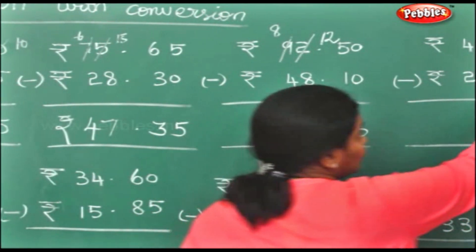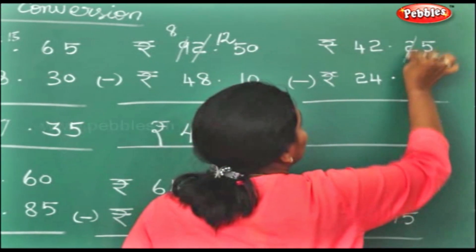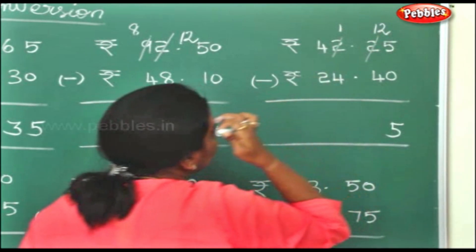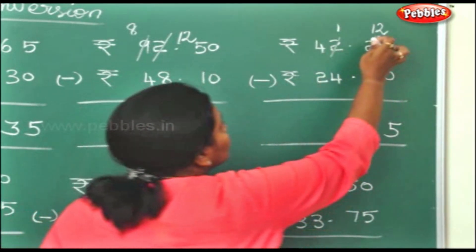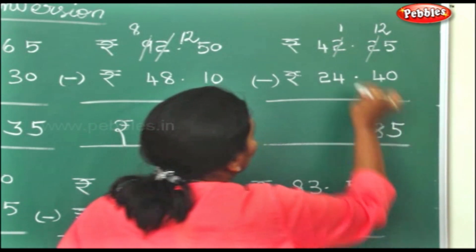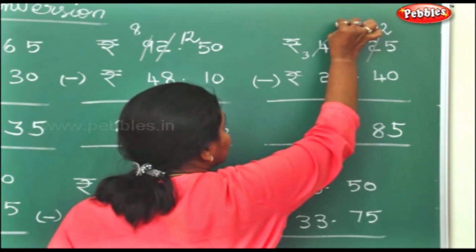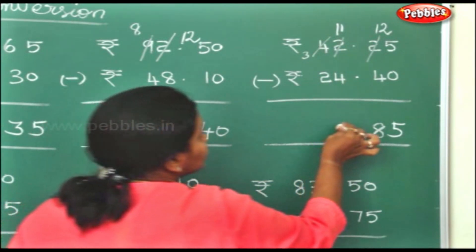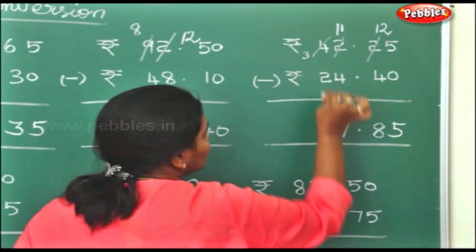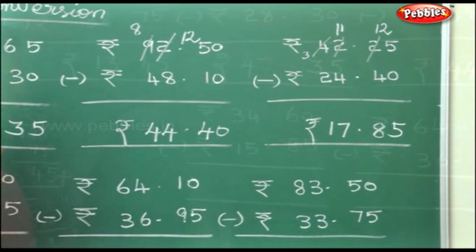Here, the 5 — just carry it down. This becomes 12, this becomes 1. So 12 minus 4 is 8. 1 you cannot minus it, so this becomes 3, this becomes 11. 11 minus 4 is 7. 3 minus 2 will be 1. So rupees 17 and 85 paise.